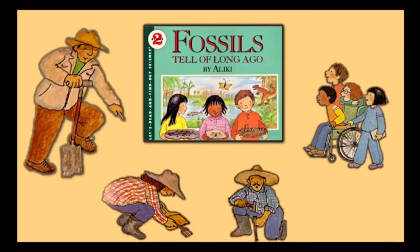Some fossils, like the fish, are actual parts of plants or animals that have turned to stone. Sometimes a fossil is only an imprint of a plant or animal. Millions of years ago a leaf fell off a fern-like plant. It dropped onto the swampy forest soil which is called peat. The leaf rotted away, but it left the mark of its shape in the peat. The peat with the imprint of the leaf hardened. It became a rock called coal. Coal is a fossil too.